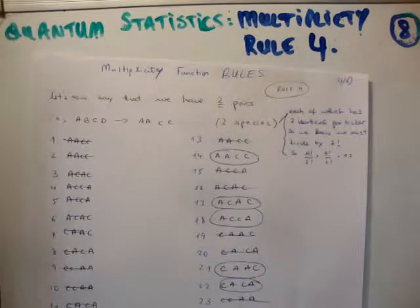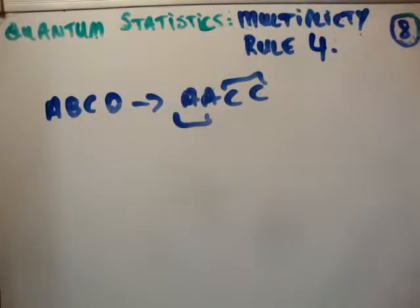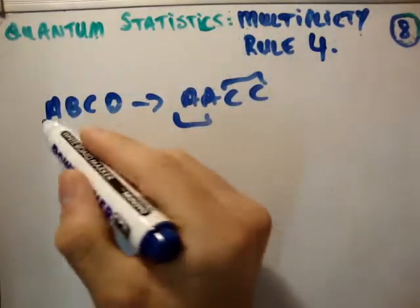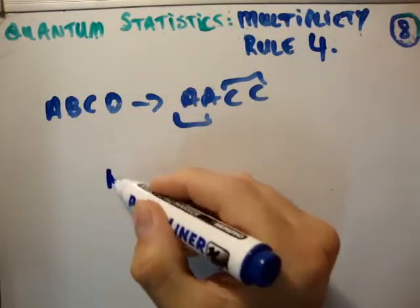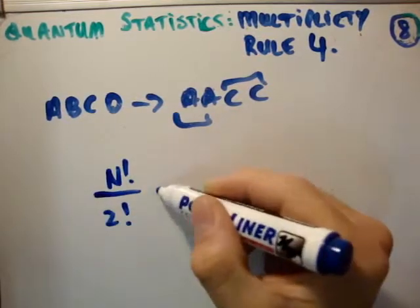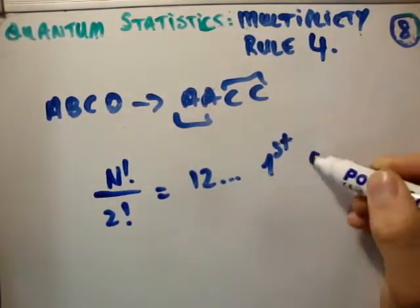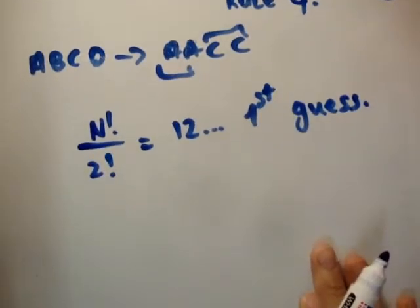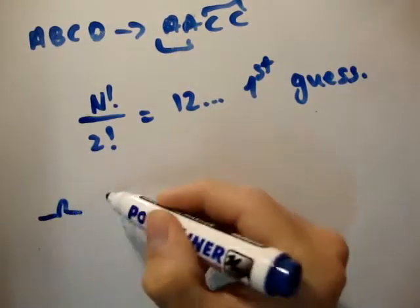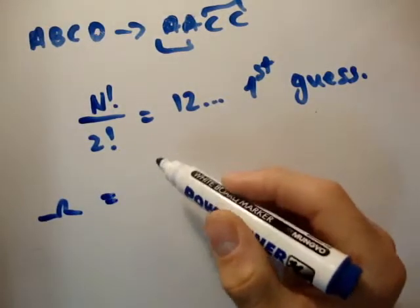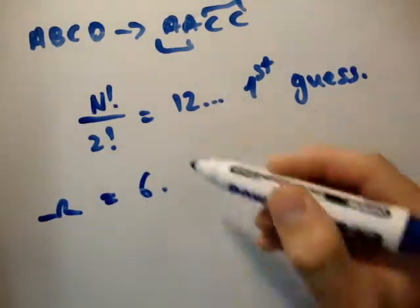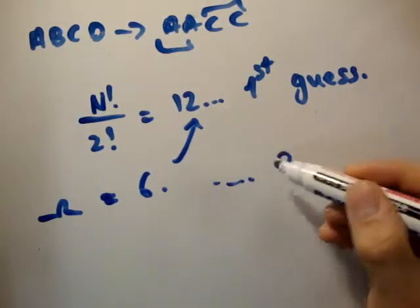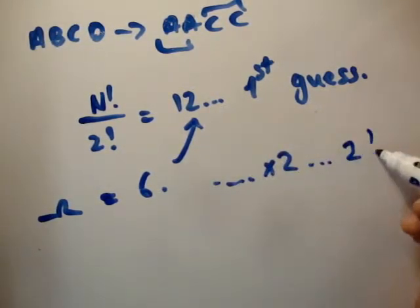So I'm going to suggest that as a first guess, the multiplicity should be 12. Okay, so let's suggest, because we know that where there's a pair, you must divide by 2 factorial. So n factorial divided by 2 factorial is equal to 12. First guess. However, I'm telling you from that table, the multiplicity is actually equal to 6, not 12. So we went from 6 to 12, so there's another factor of 2, or another factor of 2 factorial.